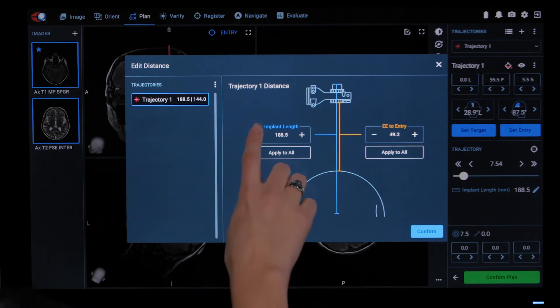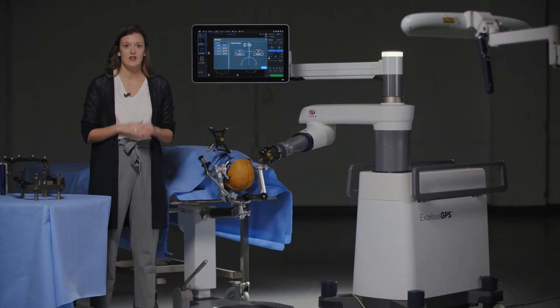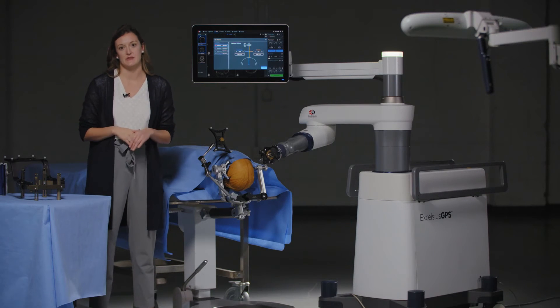By clicking the edit icon, you can set your implant length or your end effector to entry length for each trajectory to automatically set the height of the robotic arm for implant placement.